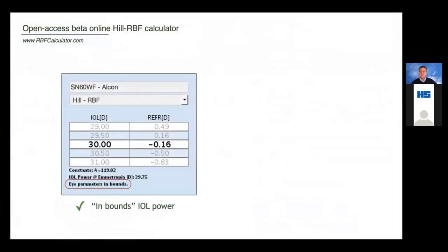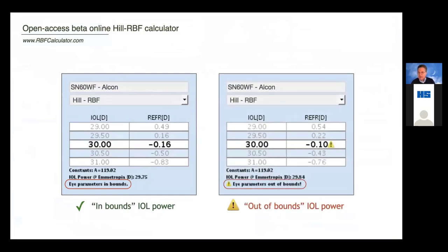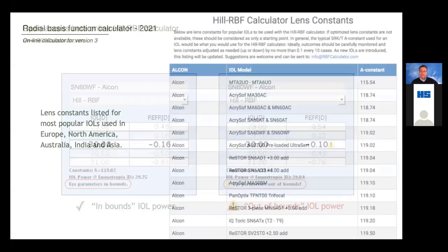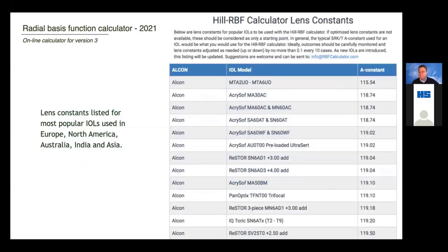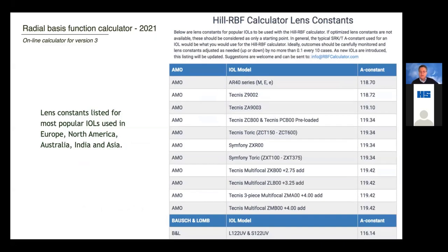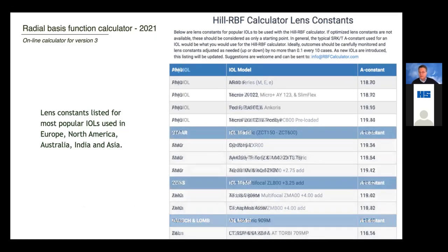As you use the calculator, you may notice that for the exact same IOL power, some cases will give you an inbounds indication while other cases will give you an out-of-bounds indication — it has to do with the data entered and whether those data points are within the boundary models. Our team has optimized lens constants for most of the popular IOLs used in Europe, North America, Australia, India, and throughout Asia, and you can go to the website to find optimized lens constants for all of these IOLs.